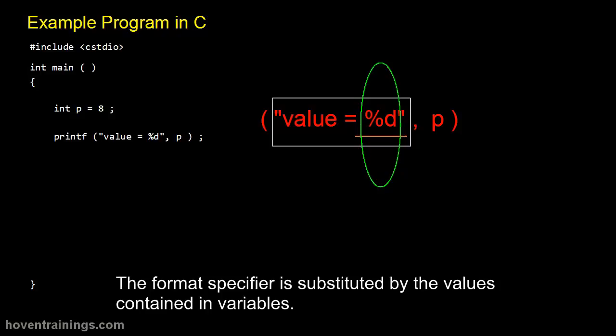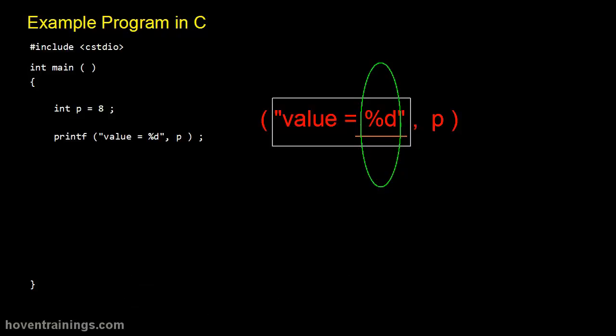The format specifier is substituted by the values contained in variables. The variables appear after the format string. The contents of p will come here. So the output would be value equal 8. This is the displayed output.